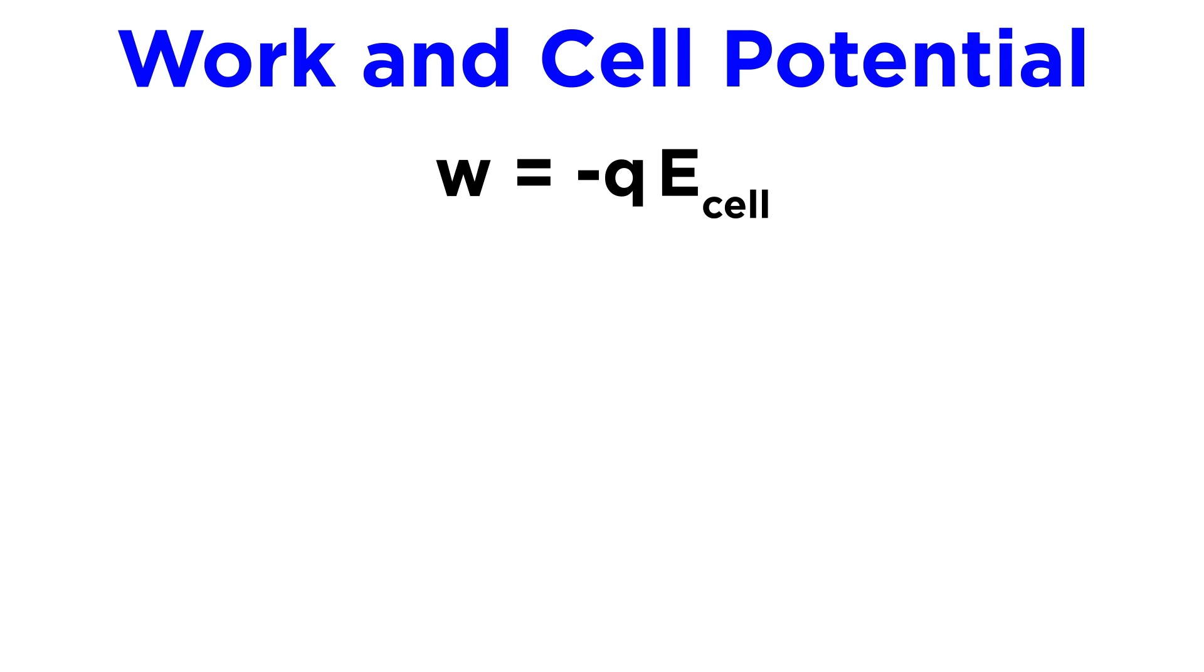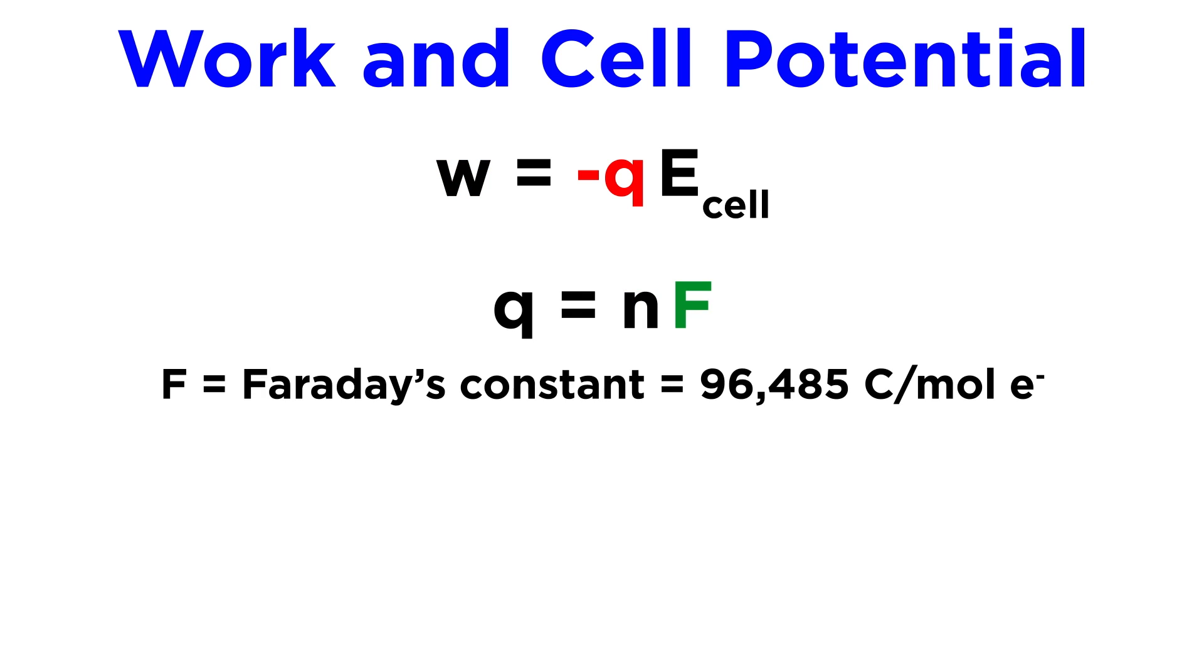Despite the fact that we can never harvest the maximum work possible from a galvanic cell, we can still make approximations with the following equation, where work equals the opposite of charge transferred, which is the moles of electrons transferred times Faraday's constant times the actual potential difference.